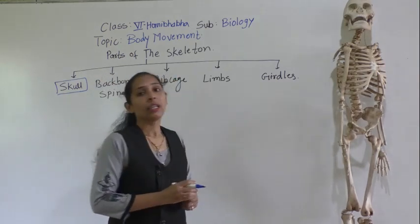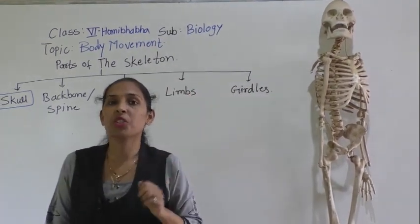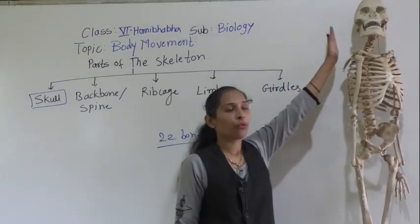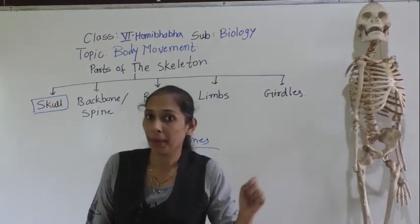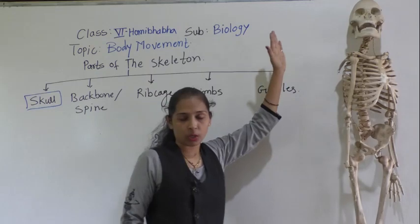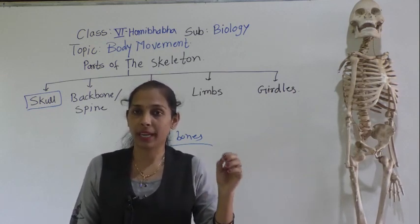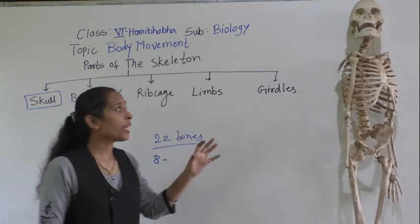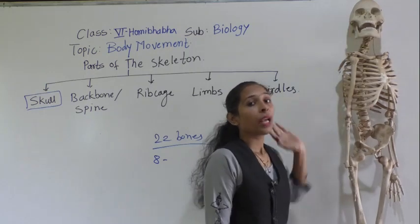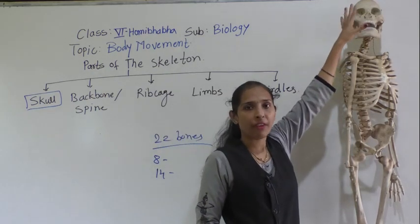The skull is a bony structure made up of 22 bones. Among these 22 bones, eight bones form the cranium, also called the brain box. Inside this cranium, the brain is protected. The remaining 14 bones help form the shape of the face.